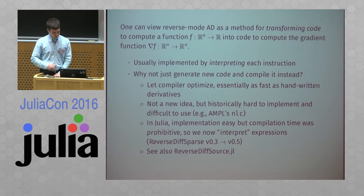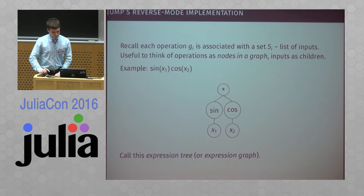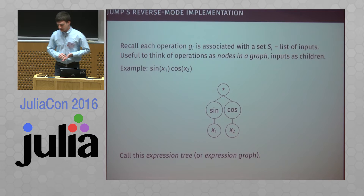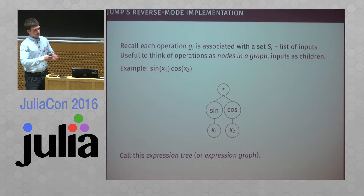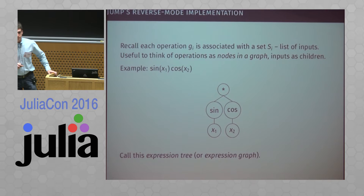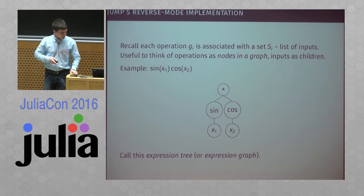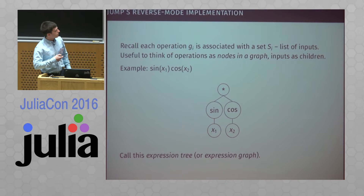You could also look at ReverseDiff source, which is another package that targets more general Julia code. In JuMP, we interpret these instructions, so we need a data structure to represent the sequence of instructions, keep it in memory, and run our algorithm on it. A useful way to think about expressions is as a graph — every operation is a node, and the inputs are the children. For example, sine of x1 times cosine of x2 forms a nice graph where the inputs to each operation are its children. I'll call this an expression tree.